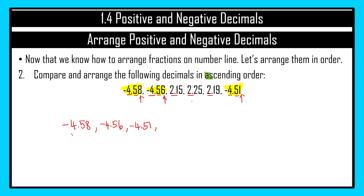Now let's look at the positive numbers. We notice there are two numbers that have 1 in the second decimal position. For positive numbers, the smaller digit comes first. So 5 is smaller than 9, and 1 is smaller than 2, giving us 2.15, then 2.19. So that will be followed by 2.25. If numbers share the same first few digits, go to where the number starts to be different, then check whether it is bigger or smaller, and arrange according to ascending order.